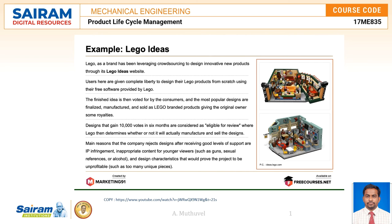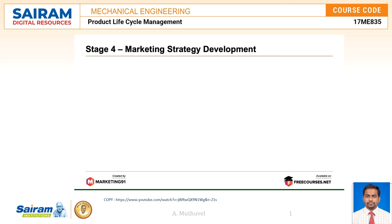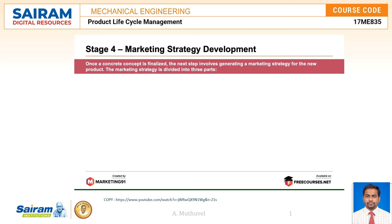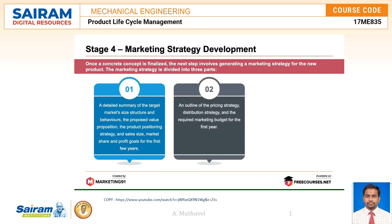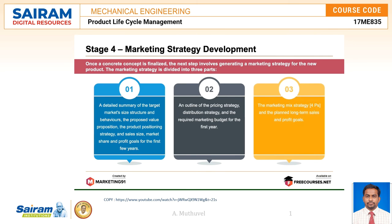Moving on to marketing strategy development — once a concrete concept is finalized, the next step involves generating a marketing strategy for the new product. This is divided into three parts: first, a detailed summary of the target market size, structure, behaviors, value proposition, product positioning, sales, market share, and profit goals for the first few years; second, an outline of pricing strategy, distribution strategy, and marketing budget; and finally, the marketing mix strategy and planned long-term sales and profit goals.